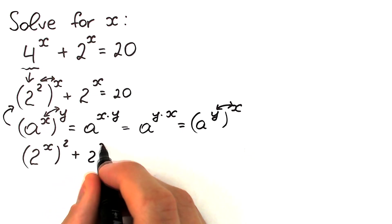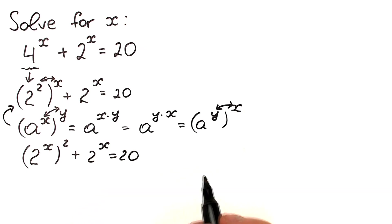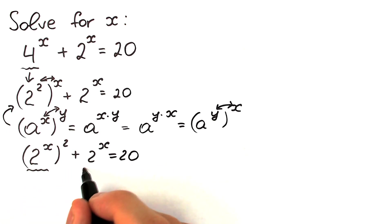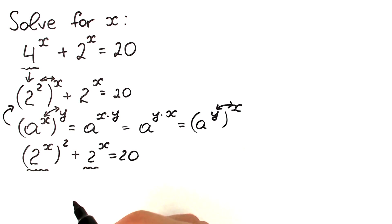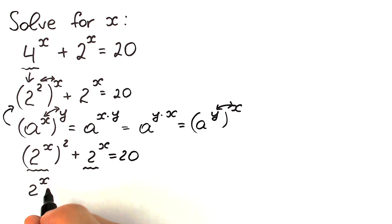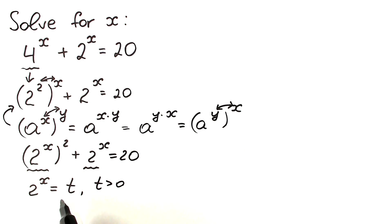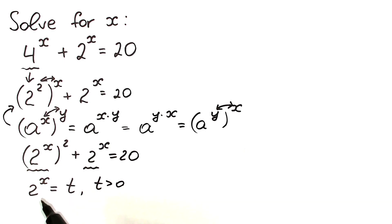So we now have 2 to the power x, raised to the power 2, plus 2 to the power x, equal to 20. We have 2 to the x in both terms, so it's great to use substitution. Let t equal 2 to the x, and of course t is greater than 0, because an exponential function never gives negative values or zero — t is always positive. This is a really important step.